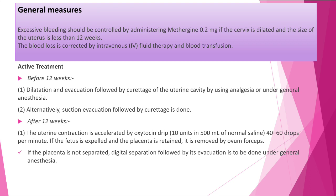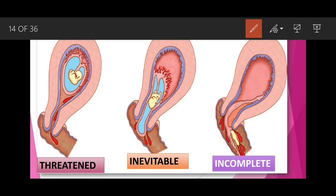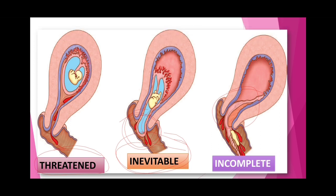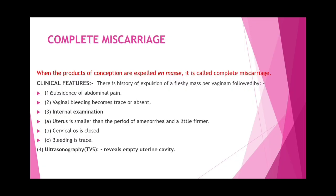After 12 weeks, uterine contractions are accelerated by oxytocin drip — 10 units in 500 ml normal saline at 40 to 60 drops per minute. If the fetus is expelled and placenta is retained, it is removed by ovum forceps. If placenta does not separate, digital separation followed by evacuation is done under general anesthesia. In inevitable abortion, the external os is dilated and abortus is expelled — continuation of pregnancy is impossible.